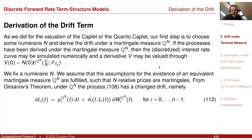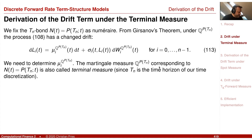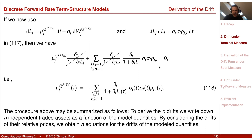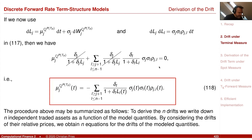We already made this derivation under one numeraire — specifically under the so-called terminal measure, corresponding to the bond that matures at the end of our time discretization. We went quickly through this derivation, so we can skip it here. We arrived at this formula for the drift under the terminal measure. The formula looks a little complicated, but you can develop some intuition.